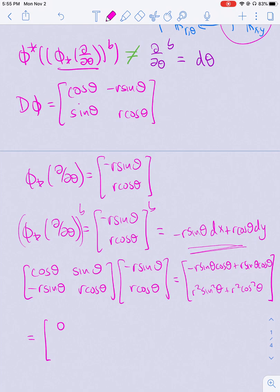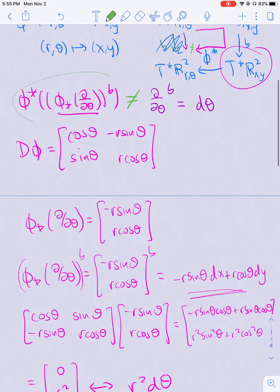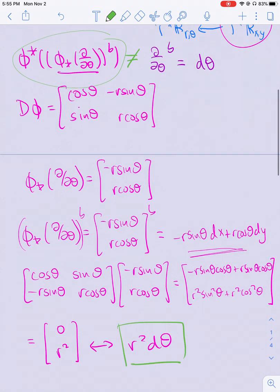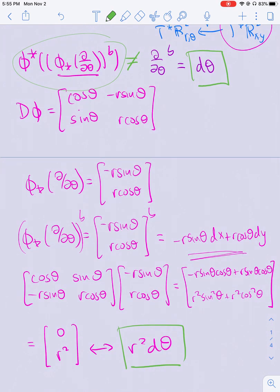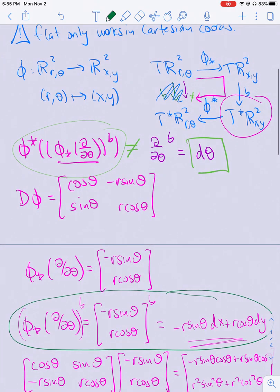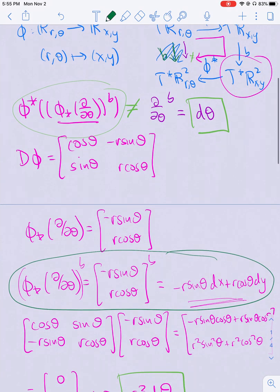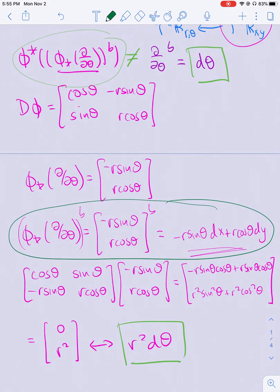So what I end up getting will be 0, r², which corresponds to r² dθ. So what I've shown is that if I compute this left hand side I get r² dθ but if I compute the right hand side I get dθ. So everything else I did made sense except this sort of bogus flat operator right here, and that was just nonsense. And I've shown that it's nonsense because if r is neither one nor negative one then these two forms can't be the same.